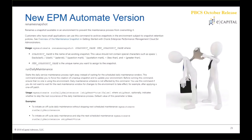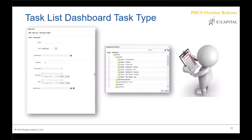Another change this month: task lists now include a dashboard task type. Task lists guide users through the navigation process flow and workflow order for their budgeting and forecasting experience. If one of those tasks involves printing or updating a dashboard, you can facilitate that by adding a dashboard task type to a task list, pointing the user at a dashboard to help them perform a dashboard-related task. That is a new addition within task lists this month.